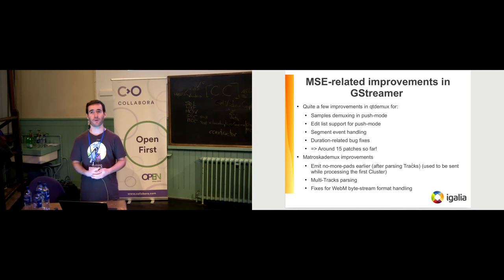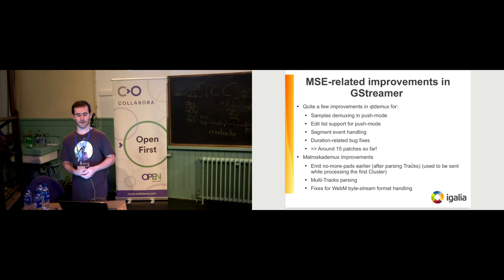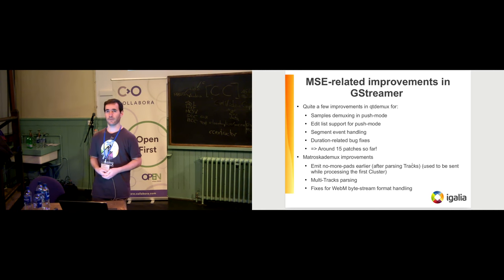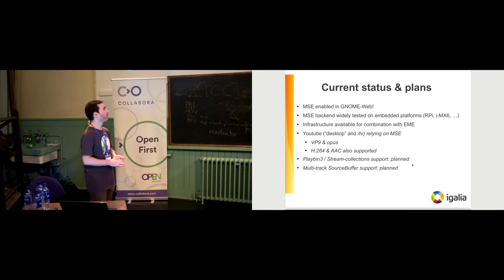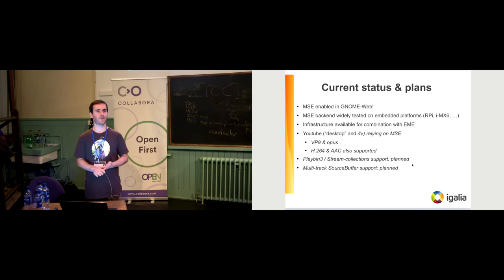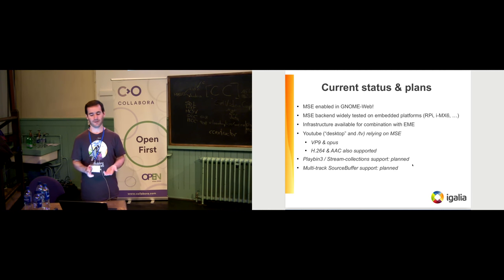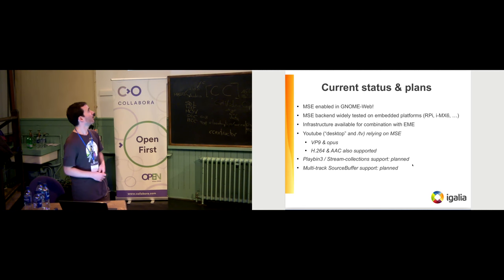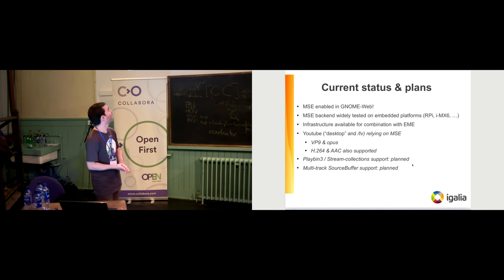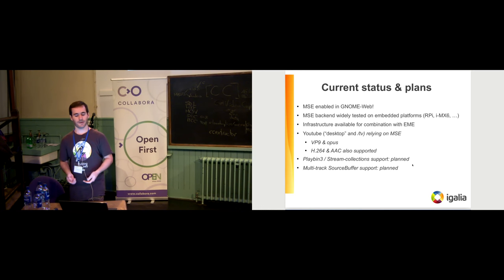We did the same for the Matroska demuxer for VP8 and VP9, though there was less work since it was already working well — mainly three changes related with pad events, ghost pads, and multi-track fixes for WebM byte stream format. With all these changes in GStreamer and WebKit, MSE is now enabled. We actually had to enable it recently because YouTube started pushing MSE on their production servers, and if your browser didn't support it well you got no video playing. Now we're quite happy with the results — it's working on desktop and embedded platforms using VP9, Opus, and H.264 when there's no VP9 decoder.